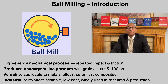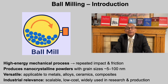Ball milling is versatile and cost-effective. It can process metals such as aluminum and copper, alloys including steels and high-entropy systems, ceramics like zirconia and even metal matrix composites. Because of its scalability and simplicity, it is used extensively in both laboratories and industrial production.